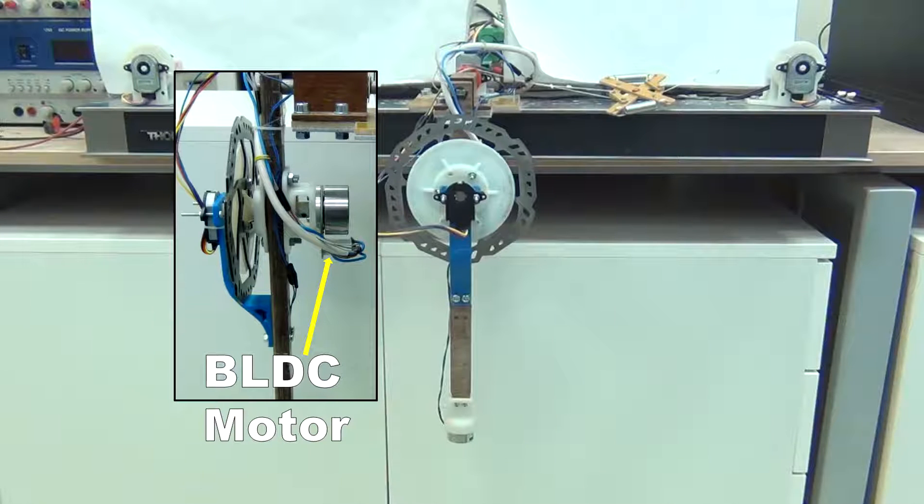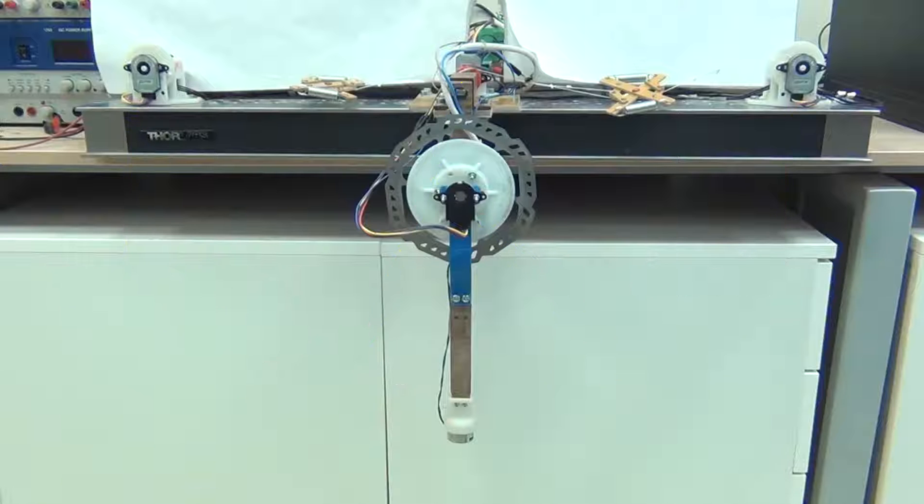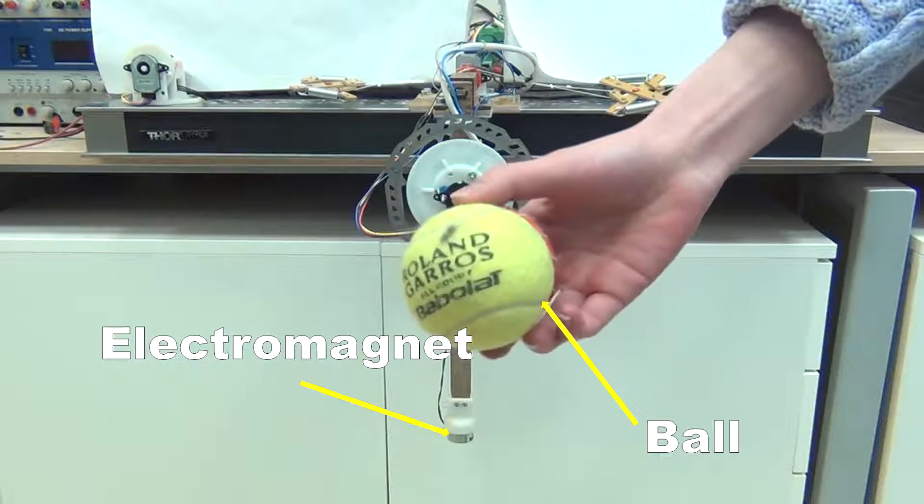It is connected rigidly to the shaft of a brushless DC motor, which can apply 0.3 Nm torque for short durations. Motor, disk and joint positions are measured by four high-resolution encoders. The ball is attached to the robot with an electromagnet.